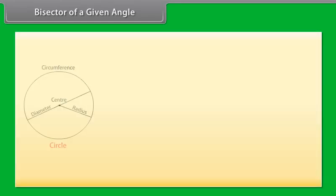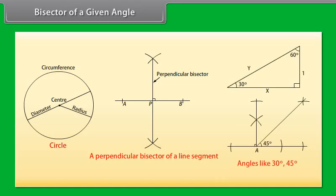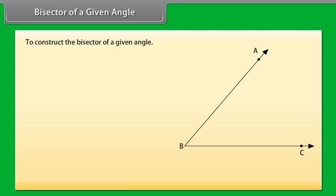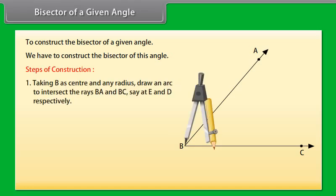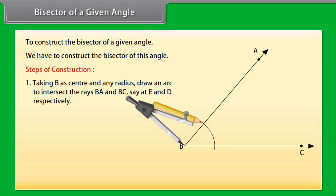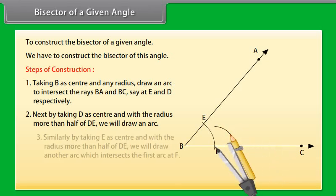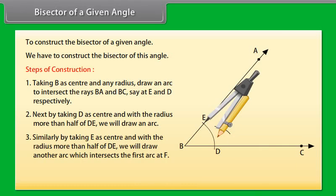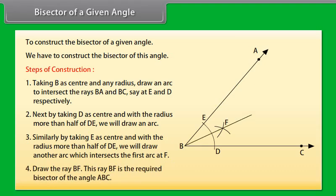Now we will learn to construct the bisector of a given angle. Let us take an angle ABC. We have to construct the bisector of this angle. First, taking B as center and any radius, draw an arc to intersect the rays BA and BC, say at E and D respectively. Next, taking D as center and with a radius more than half of DE, draw an arc. Draw another arc which intersects the first arc at F. Now draw the ray BF. This ray BF is the required bisector of angle ABC.